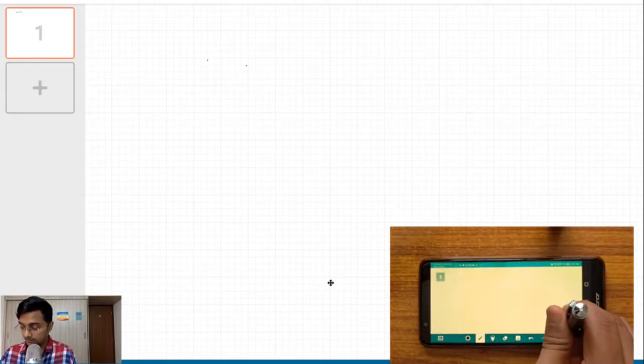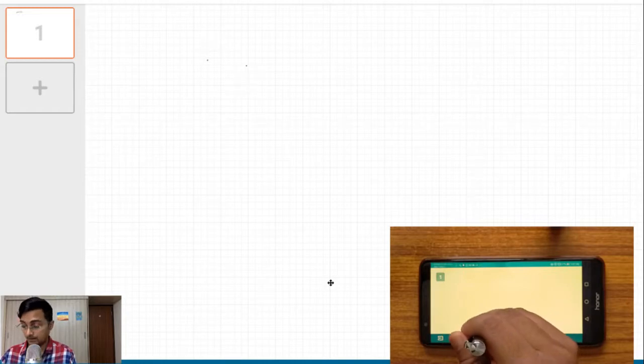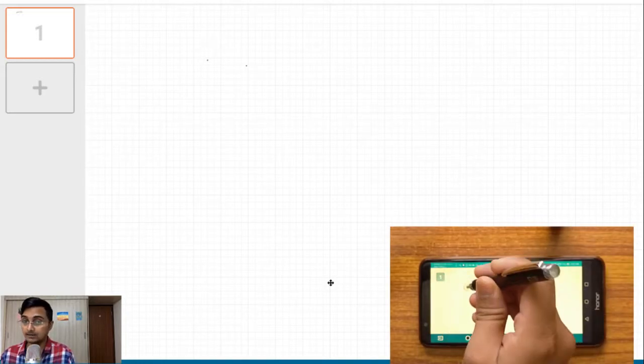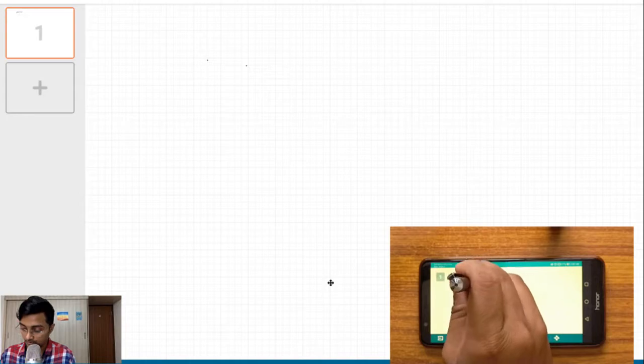Now to start writing, first you need to select the pencil kind of icon over here. You can start writing whatever it is that you want to write. So let's say we write something like this: Hello.